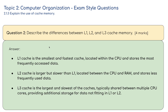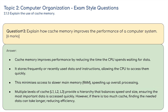Question two answer: level 1 cache is the smallest and fastest cache, located within the CPU, storing the most frequently accessed data. Level 2 cache is larger but slower than level 1, located between the CPU and RAM, storing less frequently used data. Level 3 cache is the largest and slowest, typically shared between multiple CPU cores, providing additional storage for data not fitting into level 1 or level 2.